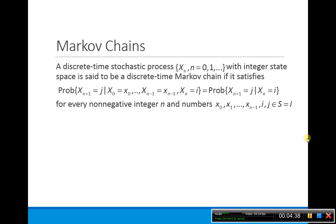Now Markov chains. We talked about stochastic processes, and so a discrete time stochastic process is actually called a Markov chain, a discrete time Markov chain, if it satisfies this property.